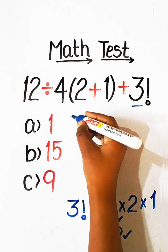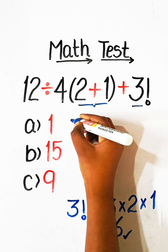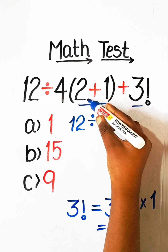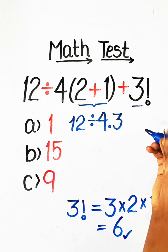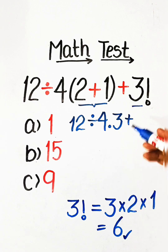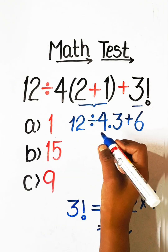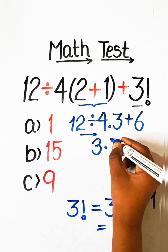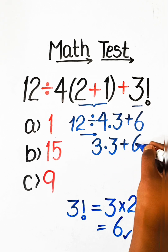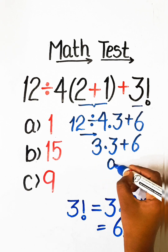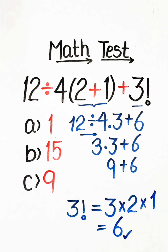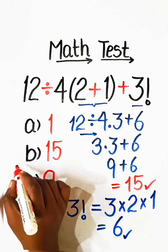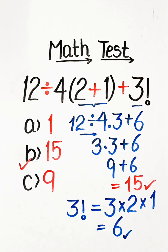Now we solve the equation. First we solve the bracket part: 12 divided by 4 multiply by 2 plus 1 is 3, plus the value of 3 factorial which is 6. 12 divided by 4 is 3, multiply by 3 is 9, plus 6. 9 plus 6 equals 15. So 15 — Option B — will be our correct answer.